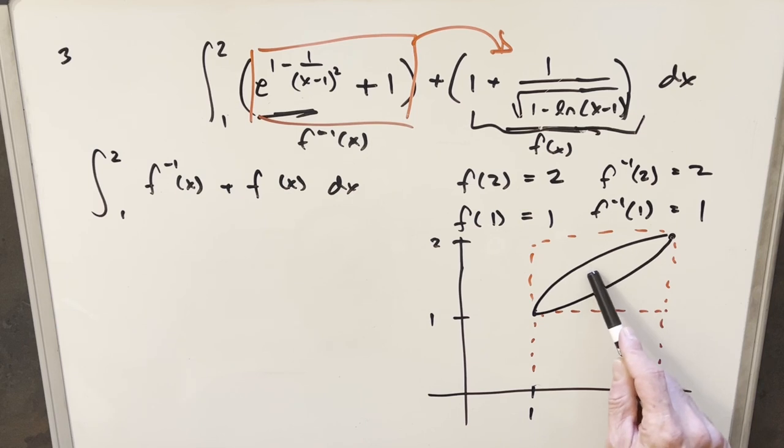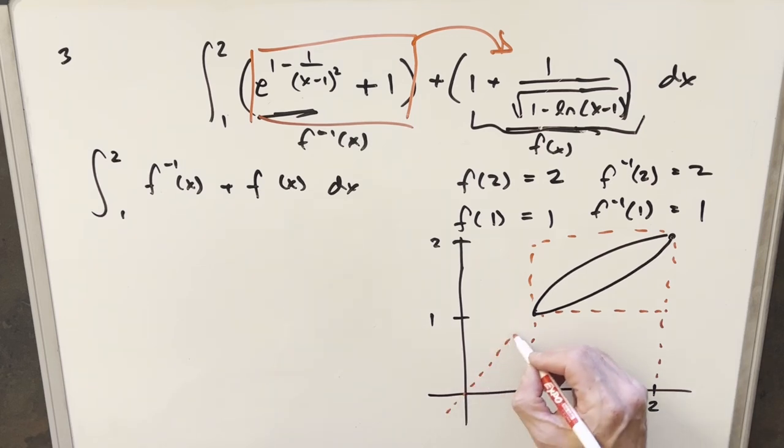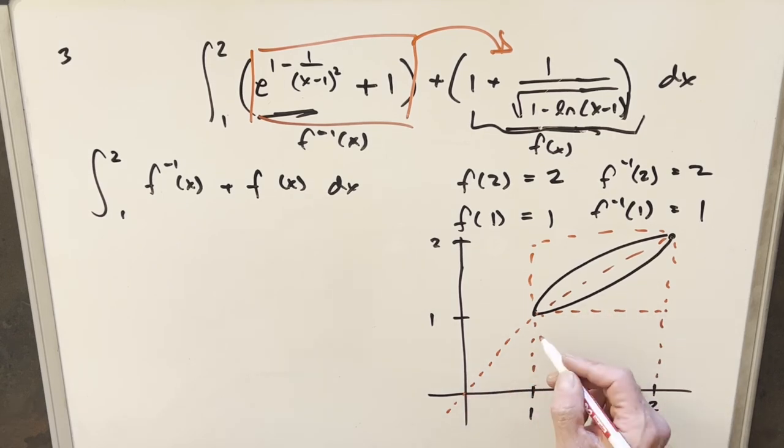Now I don't really necessarily even know which one of these is my function, which one's the inverse. It doesn't really matter because we have this symmetry here. You can tell my graph's a little bit off, but we do have this symmetry along this line. Because these are inverses and we have this symmetry along this line right here, this is going to make it really easy to calculate.